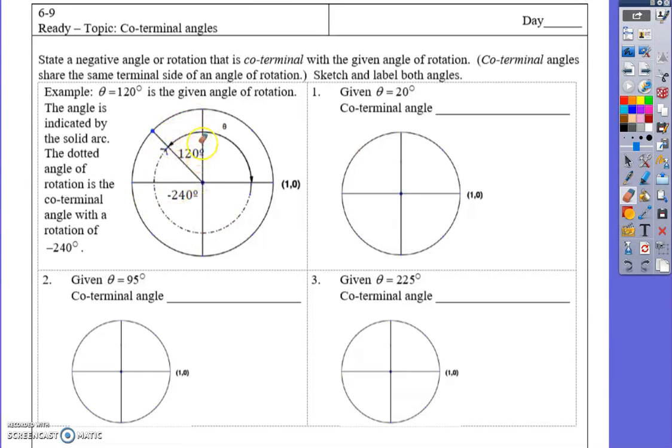Notice that if I use the absolute value of my negative co-terminal angle, they always add up to 360 degrees because they make the whole circle. We go this way and stop, then go the rest of the way that way and stop, and we go around the circle all the way.